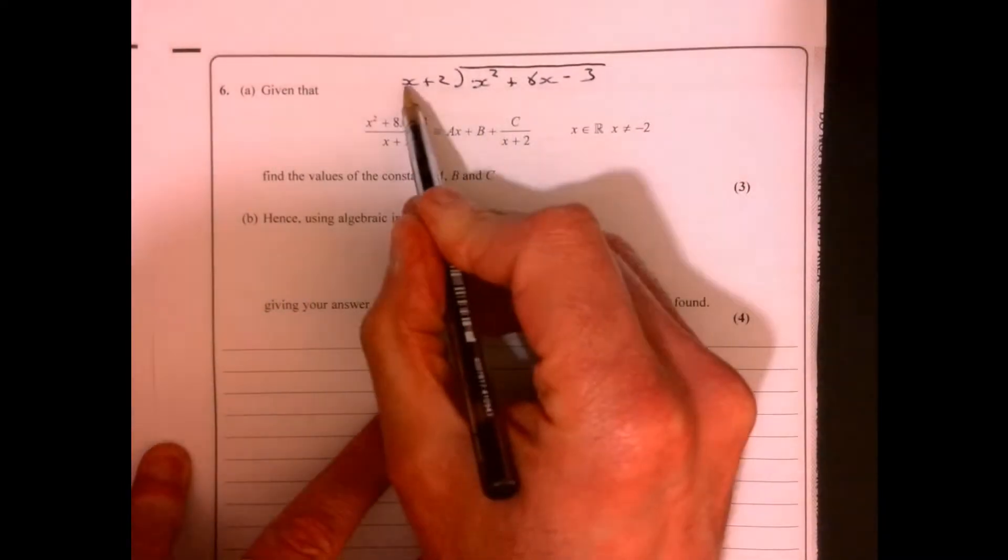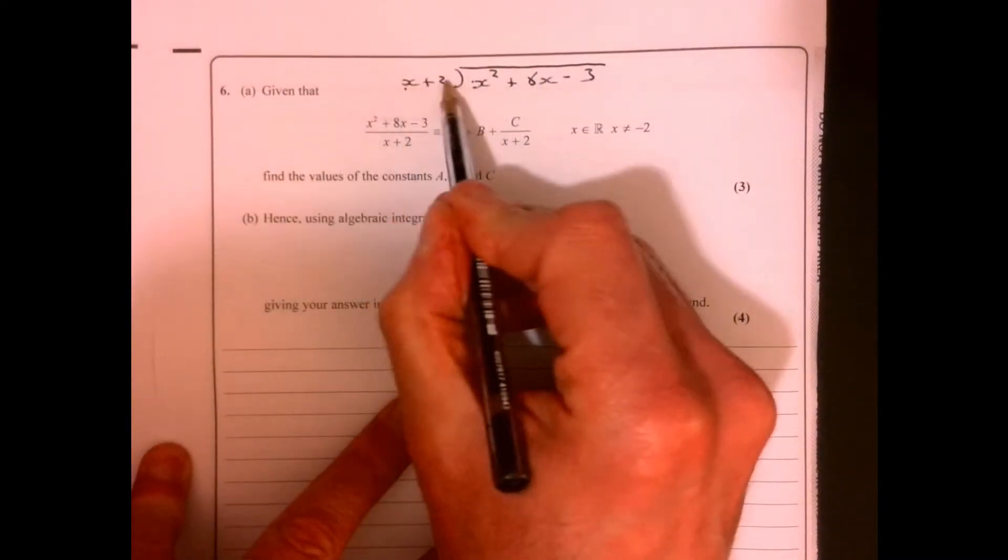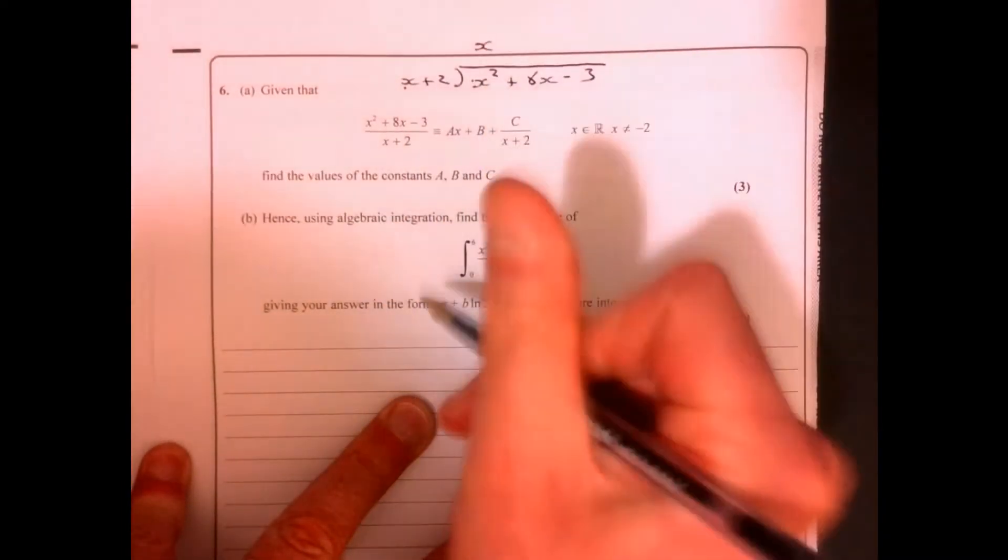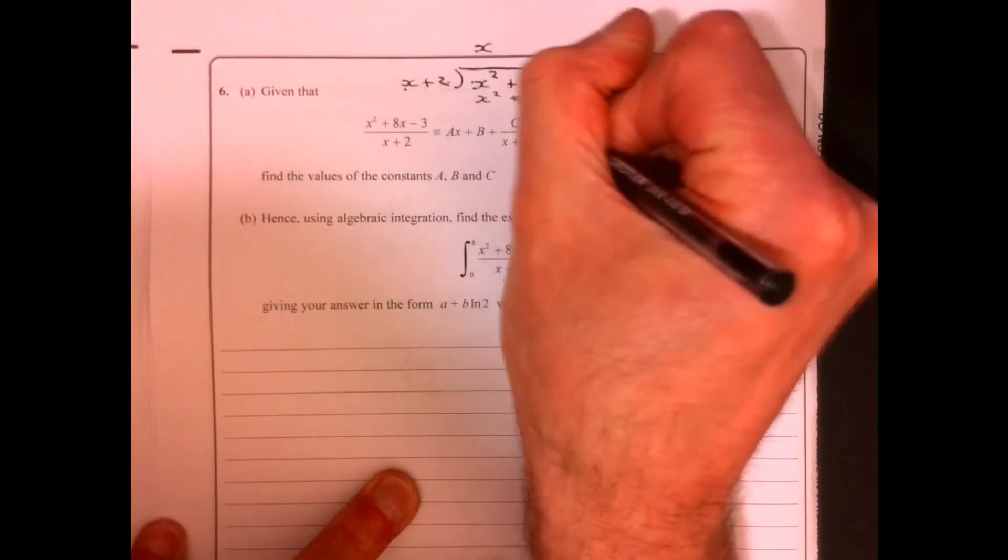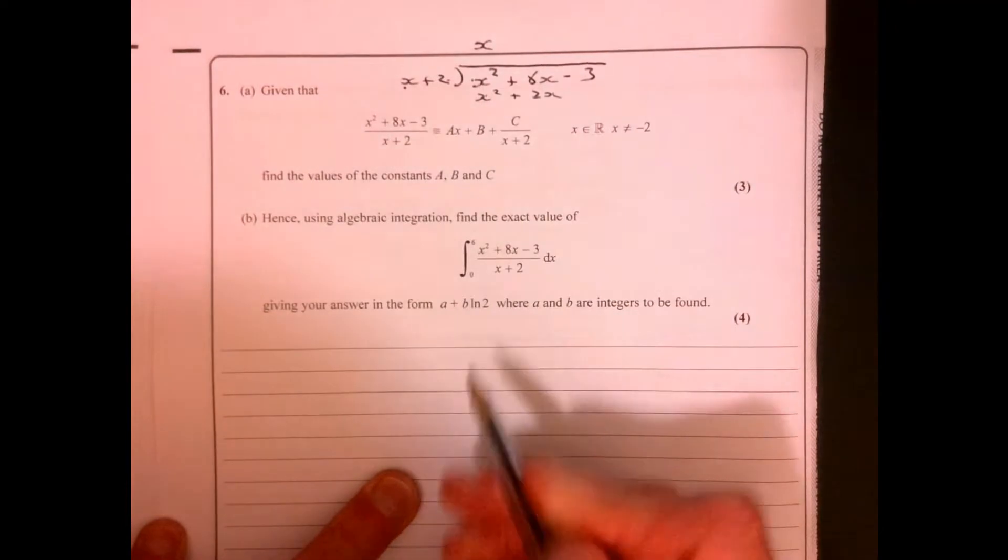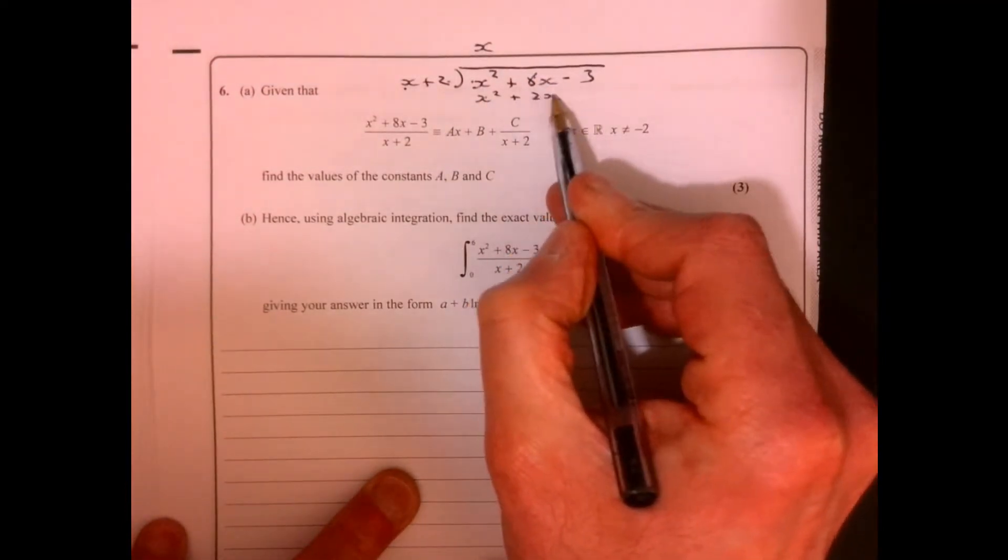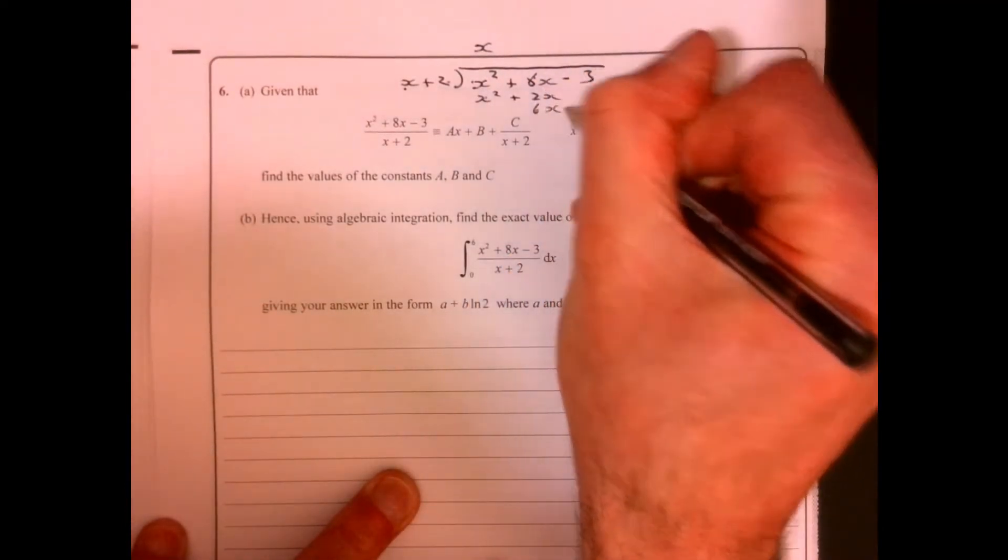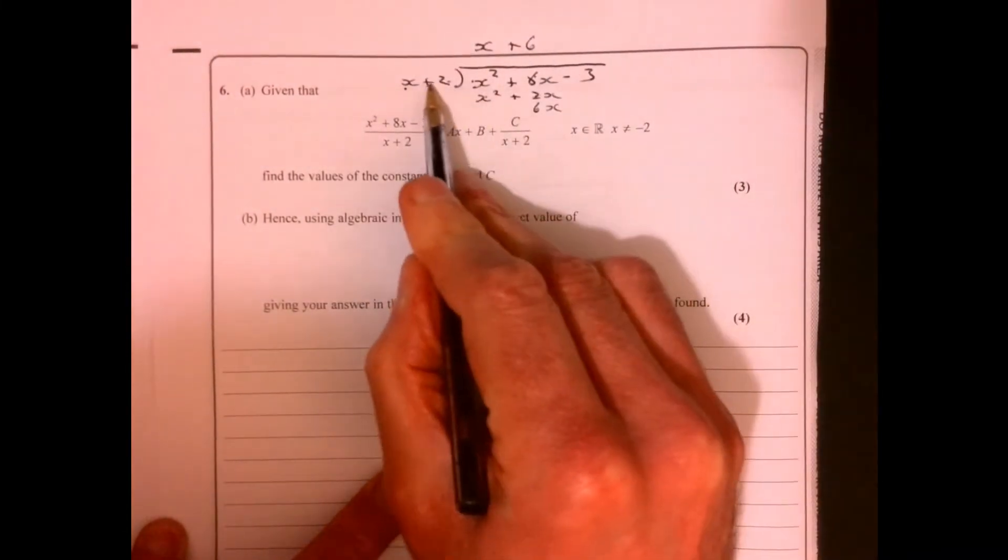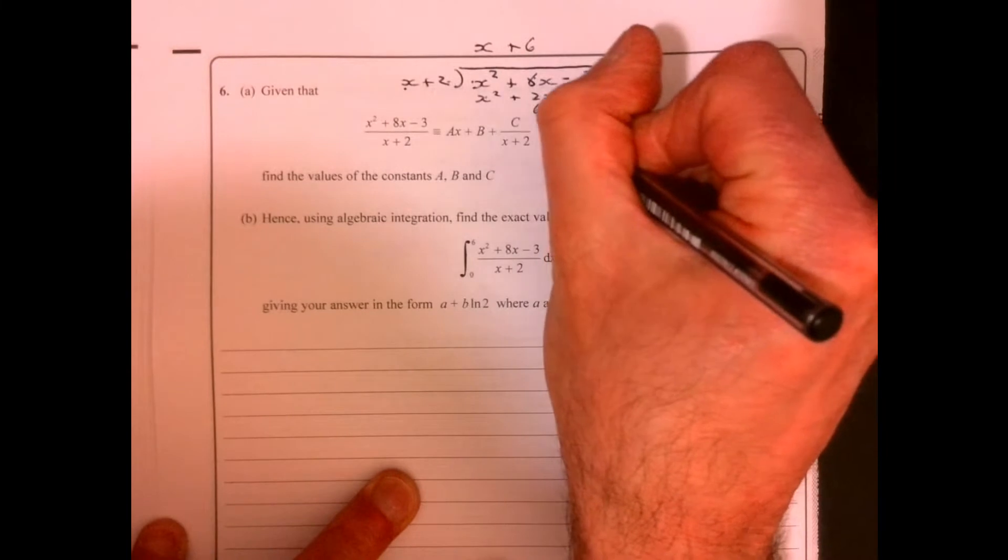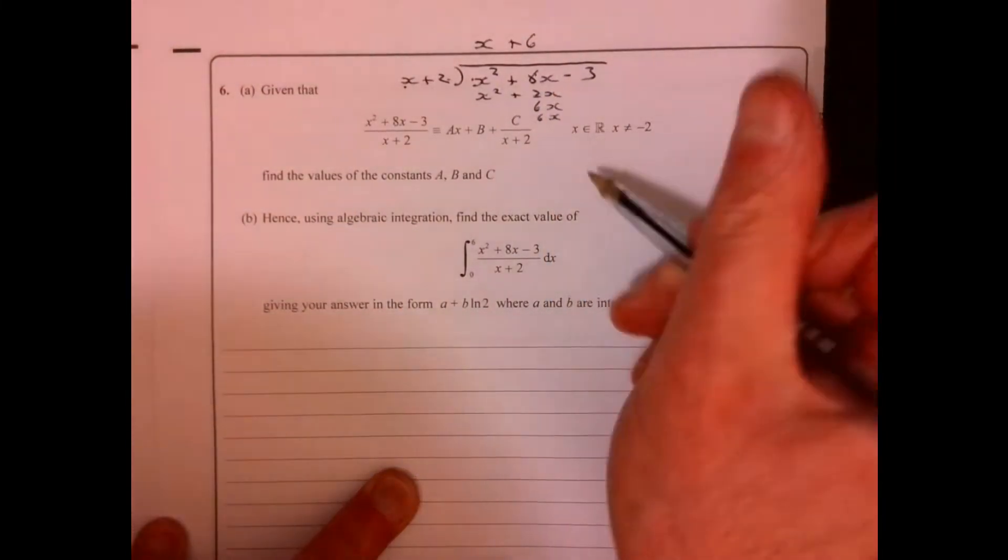Let's see what we end up with. If we multiply this by x, then we're going to have x squared plus 2x. 8x take away 2x gives me 6x down there. So if you multiply it by 6, that will give me, squeeze it in there.